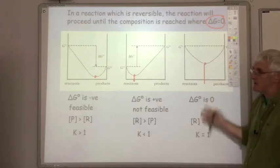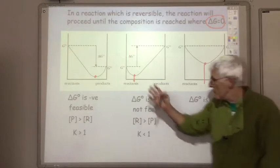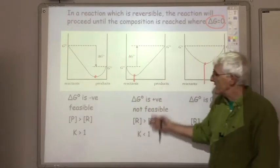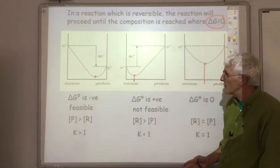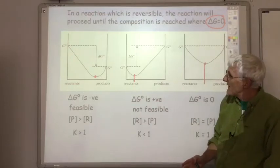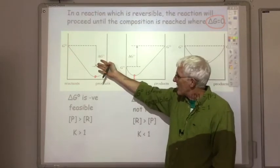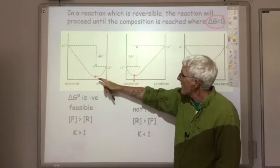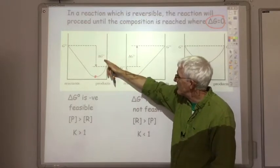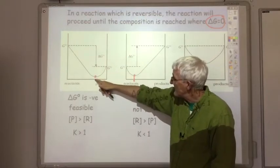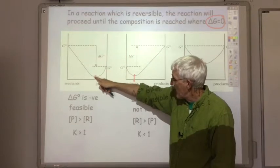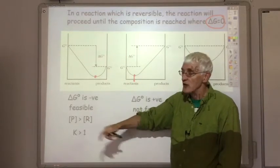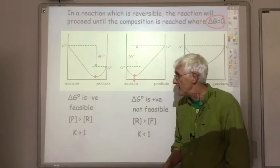This is a very unusual situation. On the whole, it will either be the first or the second situation. So it's important that you can look at that graph and realise that delta G-naught is negative — that is the equilibrium position. In addition, products are greater than reactants, so your K value will be greater than one.